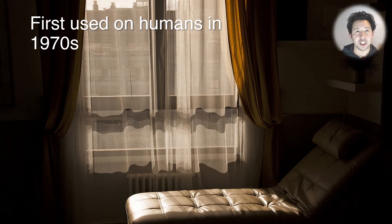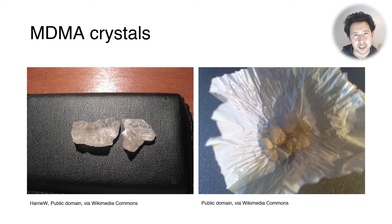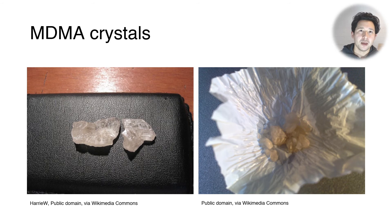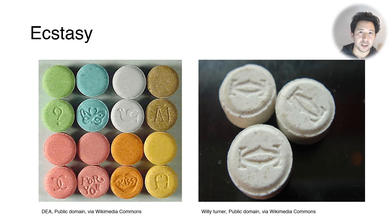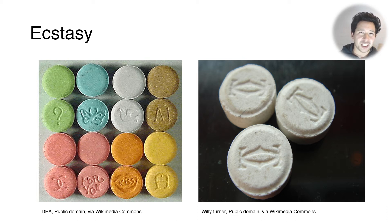MDMA in its purer forms comes as crystals, and the color of the crystals depends on the exact method used to synthesize it — there are at least five chemical methods. In pill form it's called ecstasy, and this has a reputation for being less pure or mixed with other substances, because you don't know what you're taking in a pill. Obviously a crystal or powder could also have other substances mixed in and you wouldn't necessarily know.